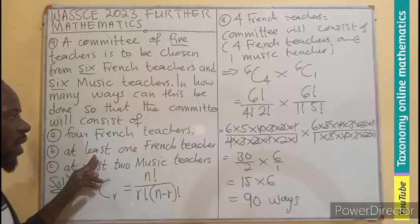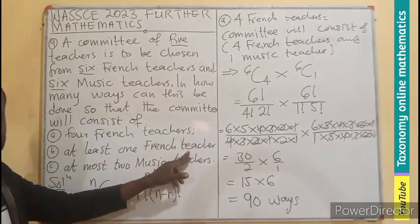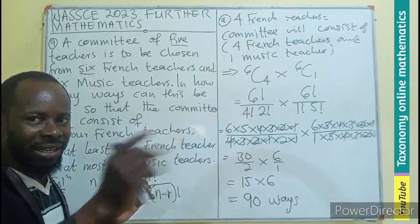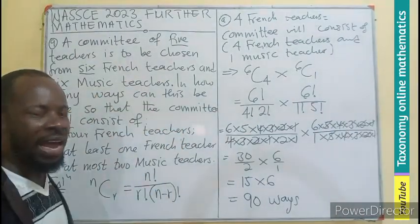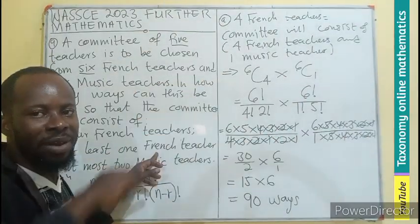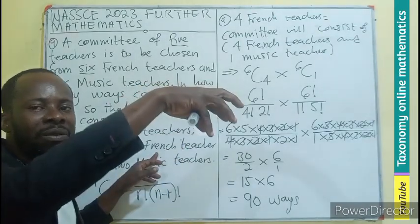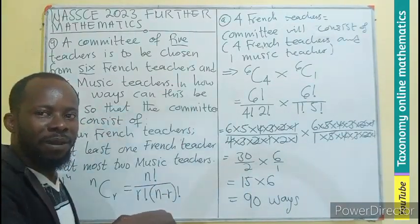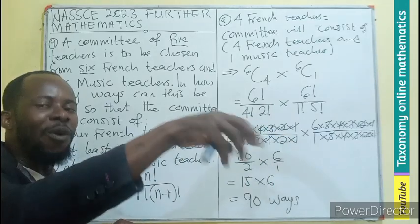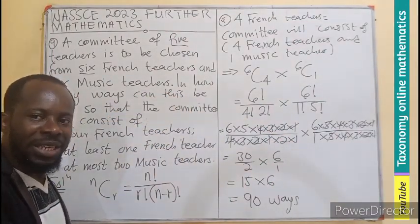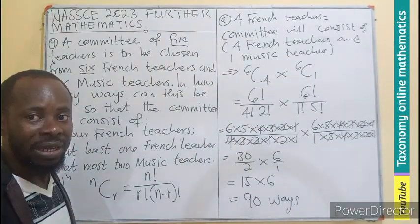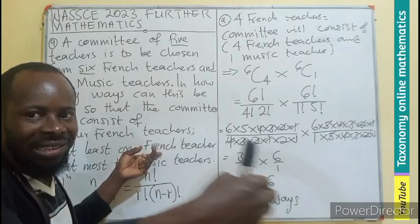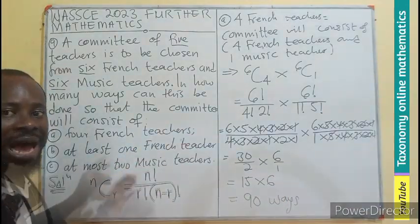For Part B, we are looking for at least one French teacher. At least one means the possibilities are: one French and four music, two French and three music, three French and two music, four French and one music, or five French and zero music. The 'or' between cases means addition.